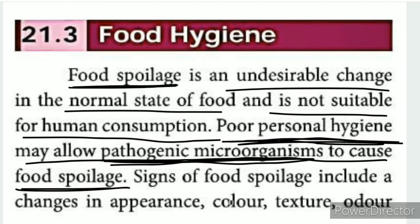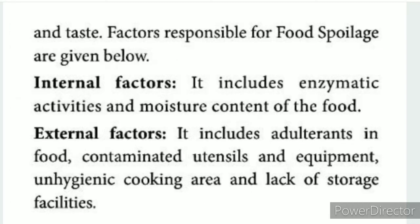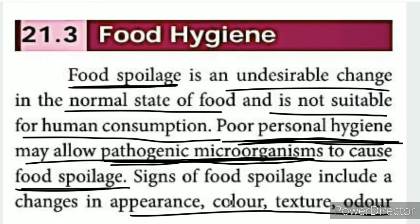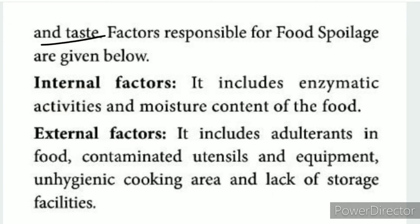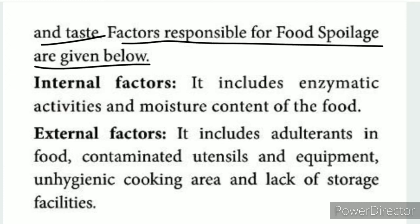Signs of food spoilage include a change in appearance, color, texture, odor, and taste. When food spoils, these signs can be used to identify it immediately — appearance changes, color changes, texture changes, odor changes, and taste changes. Factors responsible for food spoilage are given below: internal factors and external factors.